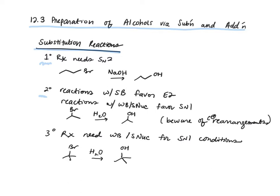Instead, we want a reaction with a weak base that's a strong nucleophile to favor an SN1 reaction, so here we treat our secondary alkyl halide with water. You want to be aware of the potential for carbocation rearrangement — this can be movement of a hydrogen, a methyl group, an alkyl group, or even a ring expansion. In tertiary alcohols, we don't need to worry about carbocation rearrangement because our carbocation intermediate is already tertiary, so it's not going to move anywhere.